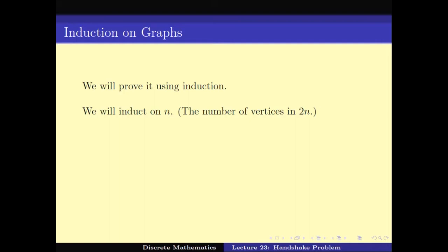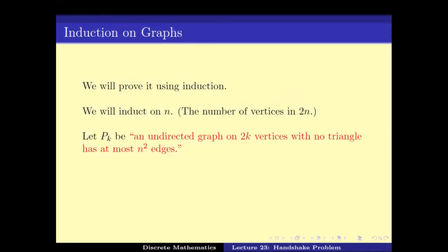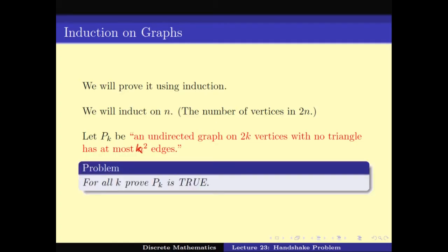We have to break the problem into cases. Let P(k) be the statement that an undirected graph of 2k vertices with no triangle has at most k² edges. We want to prove that for all k, the statement P(k) is true.